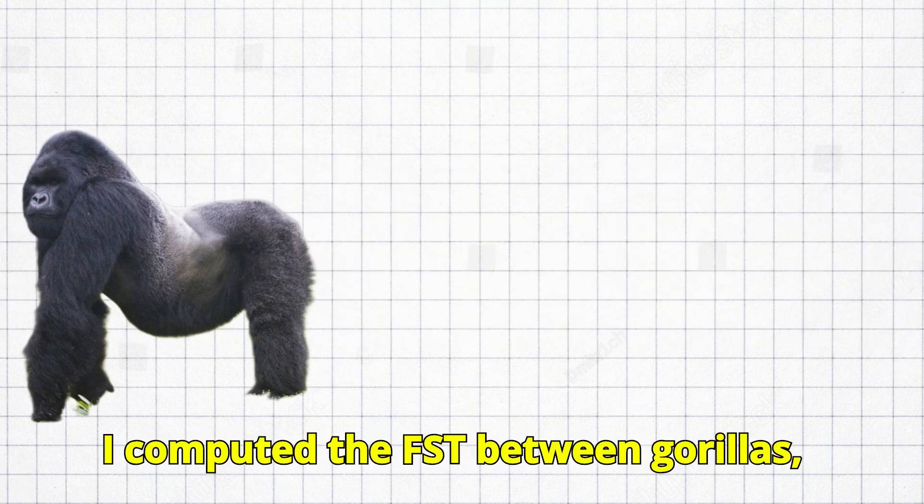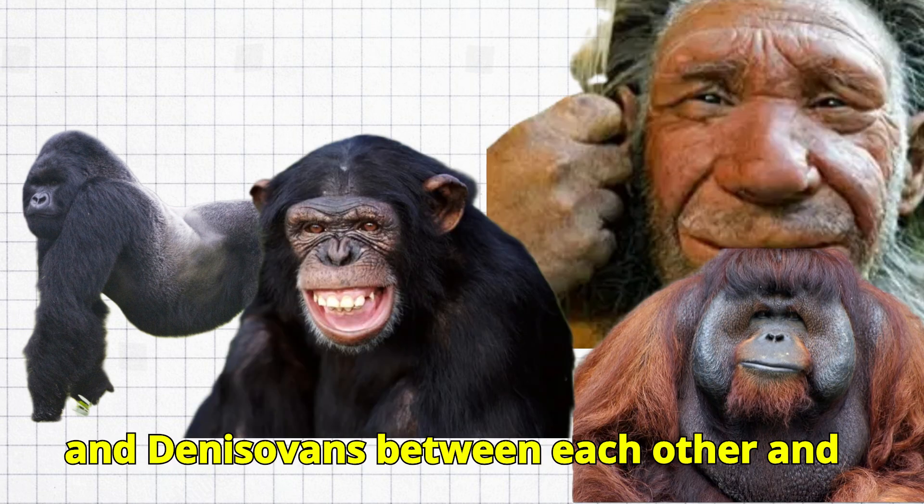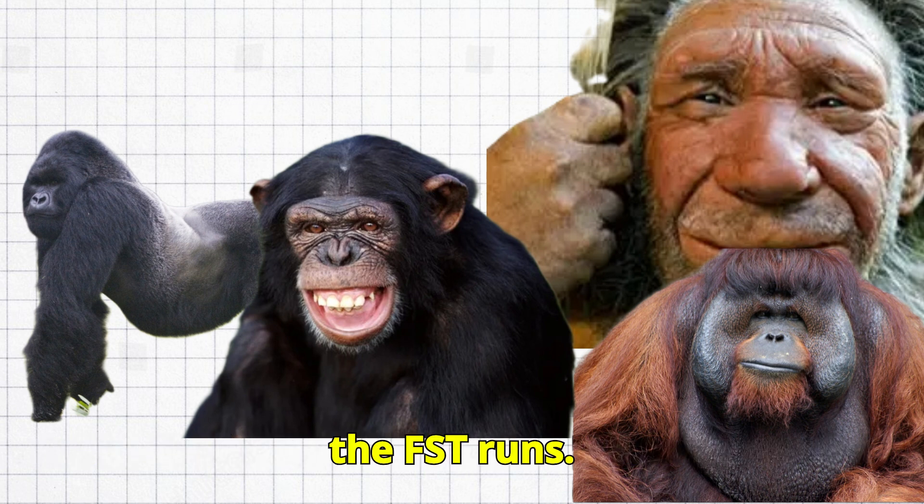I computed the FST between gorillas, orangutans, chimpanzees, Neanderthals, and Denisovans between each other and some modern human populations. Here are the FST runs.